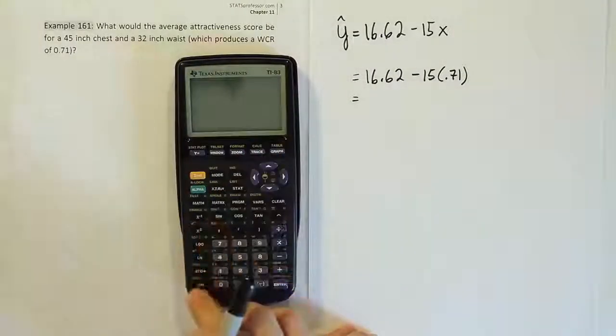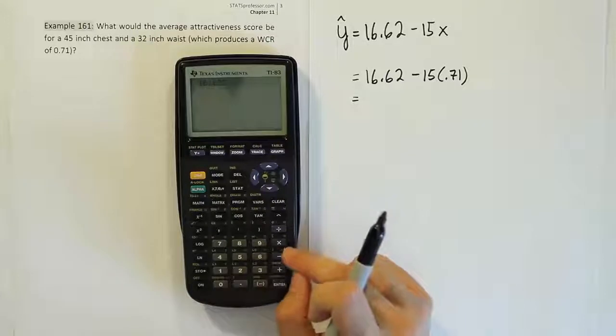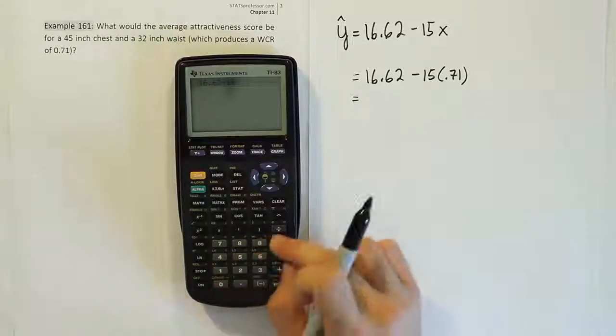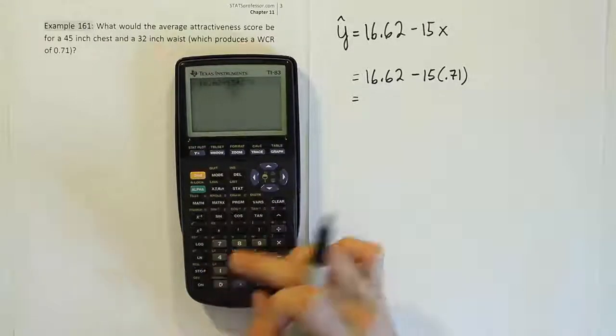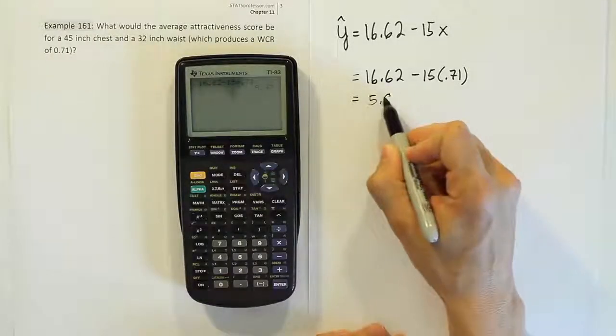Okay, so let's do that quickly. We're going to have 16.62 minus 15 times 0.71. And what this gives us is 5.97.